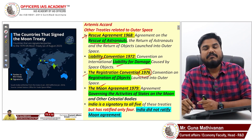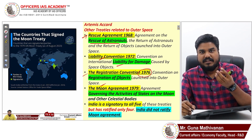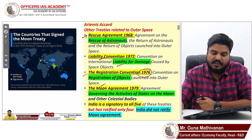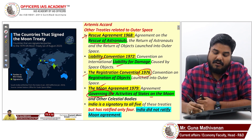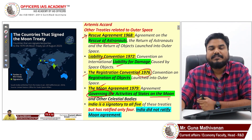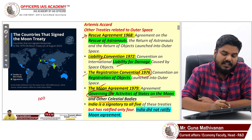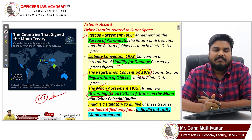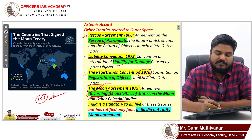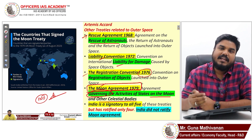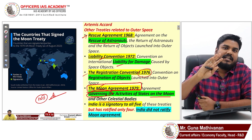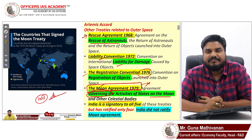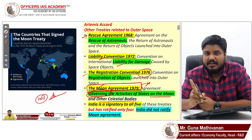The fifth is the Moon Agreement, which aims to govern activities on the Moon and other celestial bodies like Mars. India has signed all five treaties, but India did not ratify the Moon Agreement — India ratified only four of the five treaties.